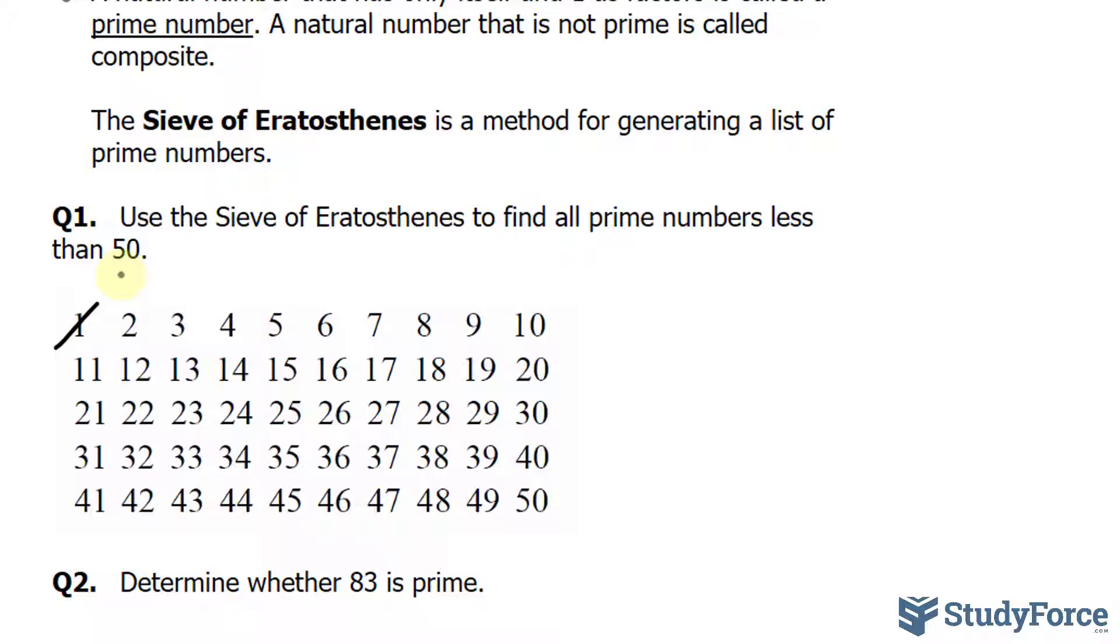The reason is that a prime number must be divisible by exactly two positive integers. 1 is divisible by only one positive integer, itself, so it is not a prime number.